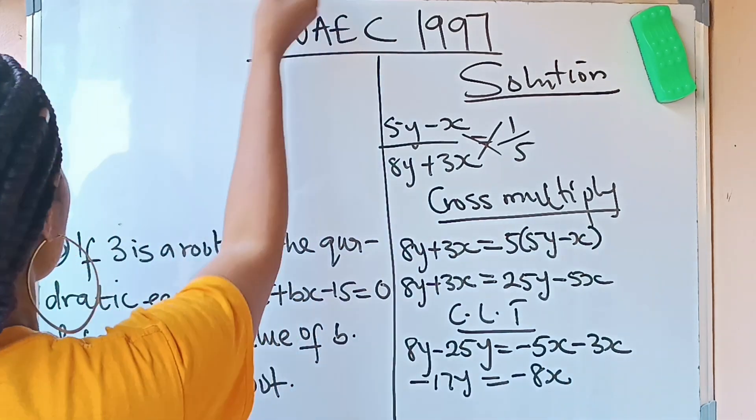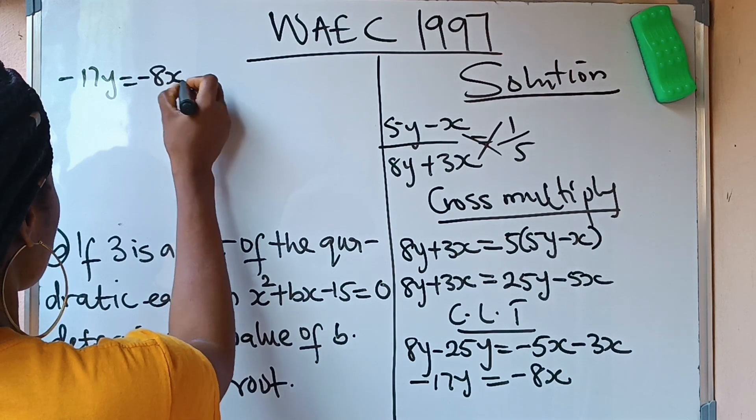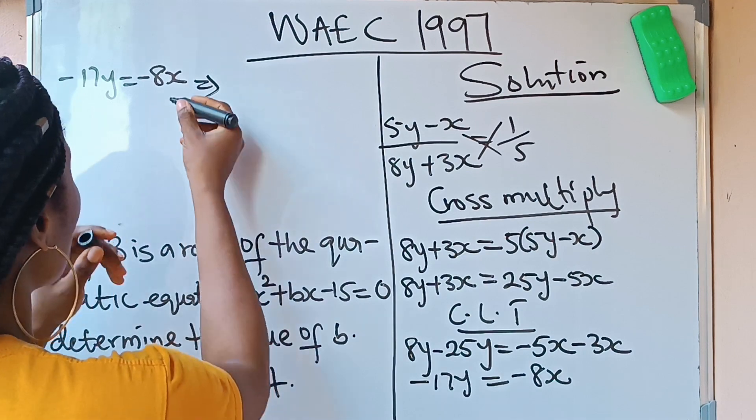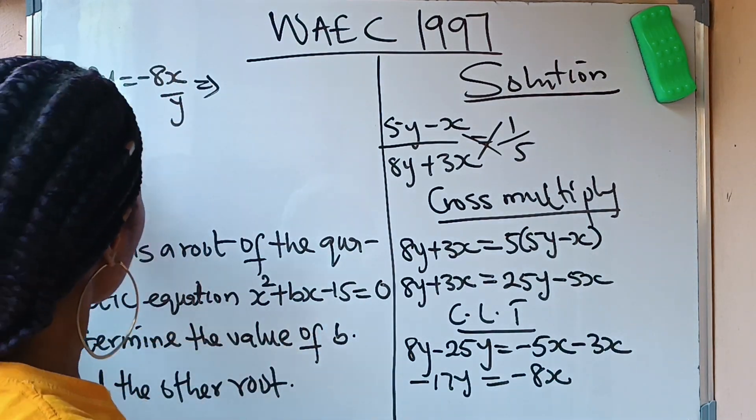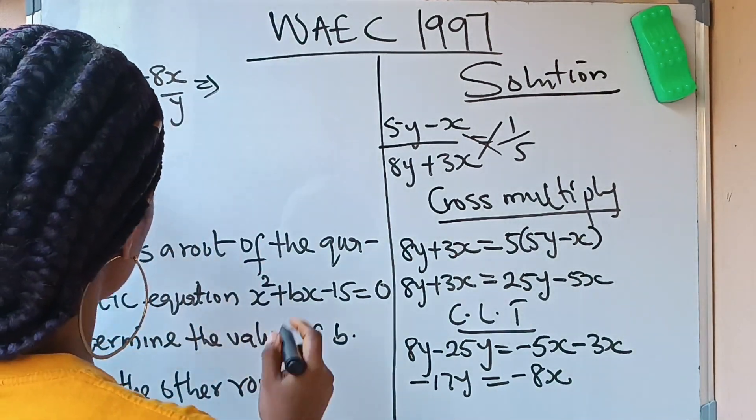Now remember we are looking for x/y. So for me to put over y here so that I'll have x/y, that means I will also put over y to this side. Whatever I do to the right hand side, I will also do the same thing to the left hand side.